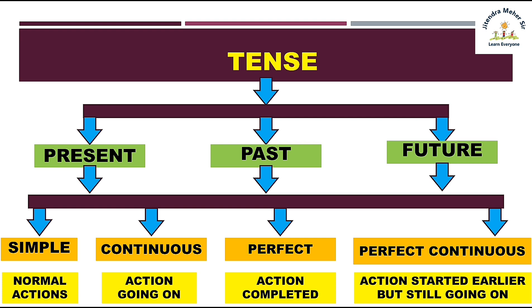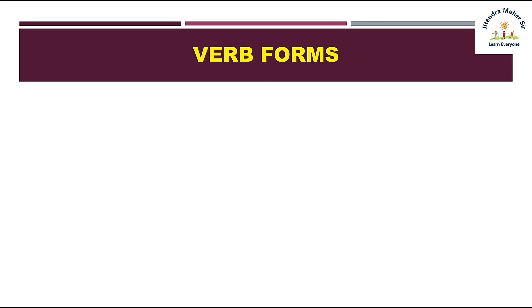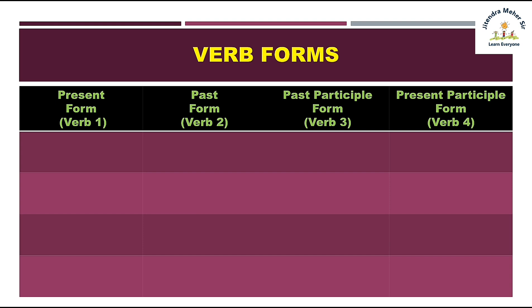Toh yeh hain total 12 tenses. Inko bari ki se samajh ne wale hain. Pehle dekhte hain simple tense — simple present, simple past, and simple future. Pehle hame verb forms ko samajhna zaroori hai. Work ka first form jise kahte hain present form, work ka second form jise kahte hain past form, work ka third form jise kahte hain past participle form, aur jis mein ing lagta hai use kaha jata hai present participle form.